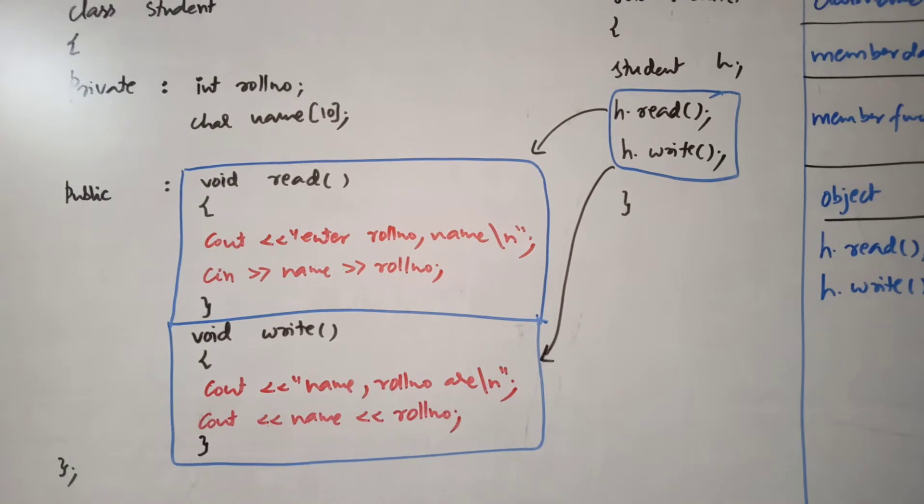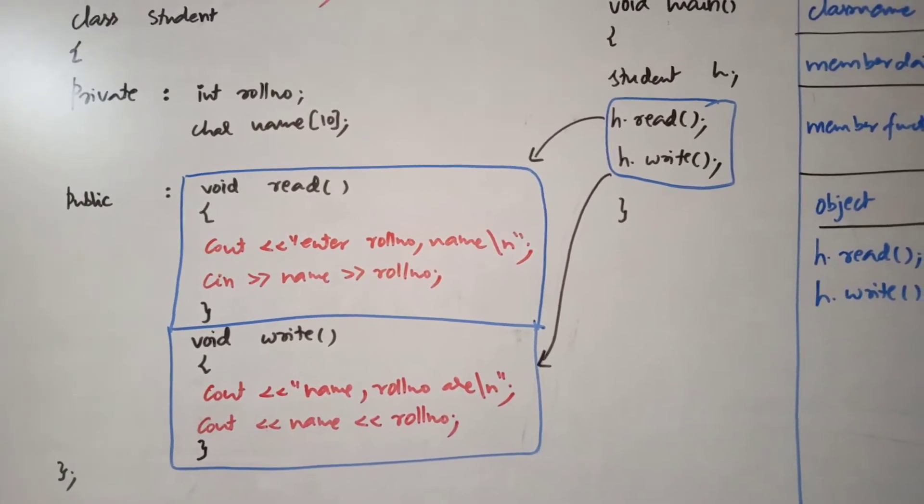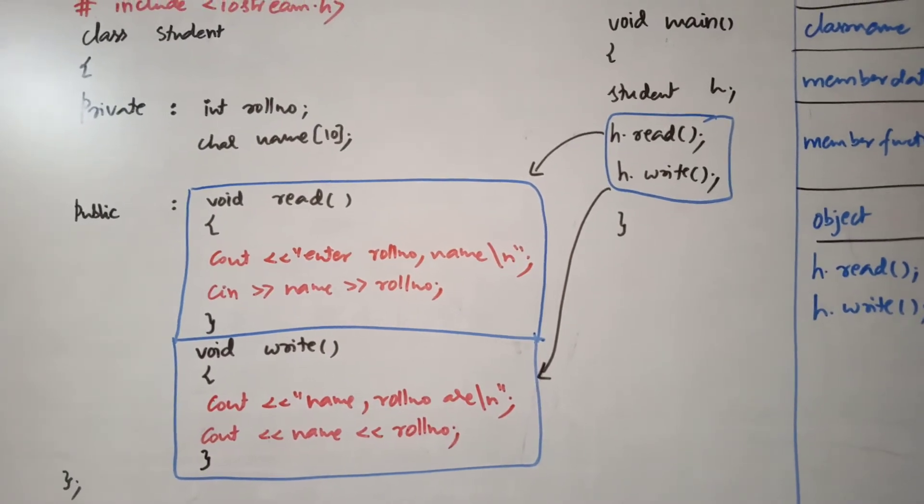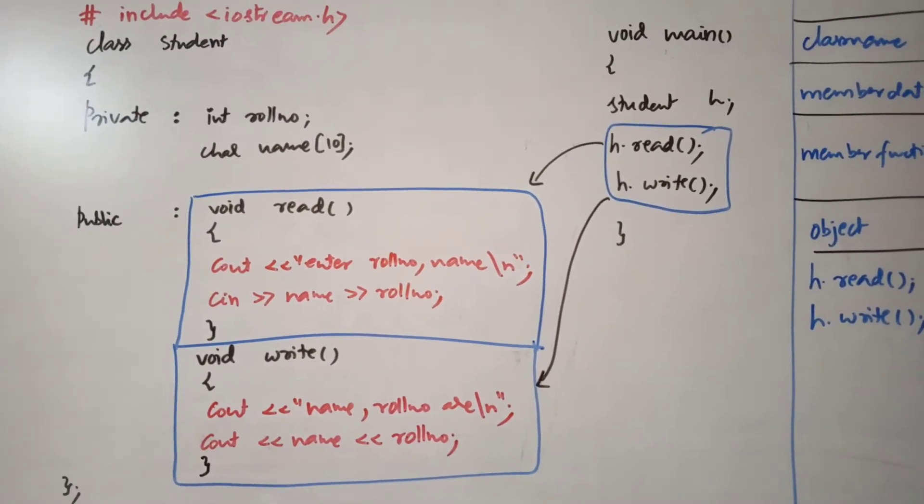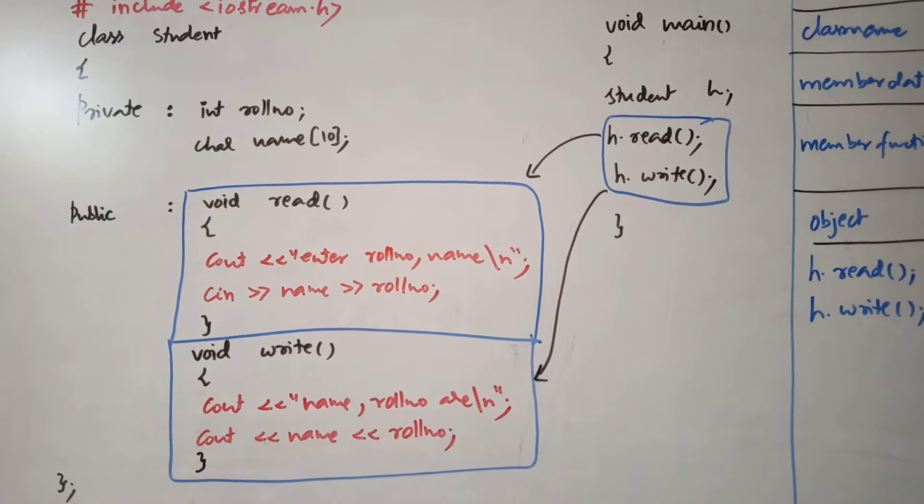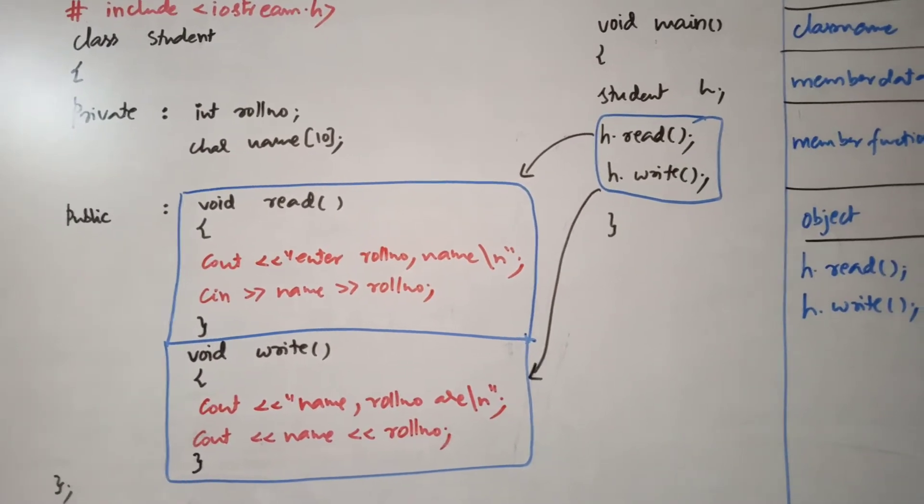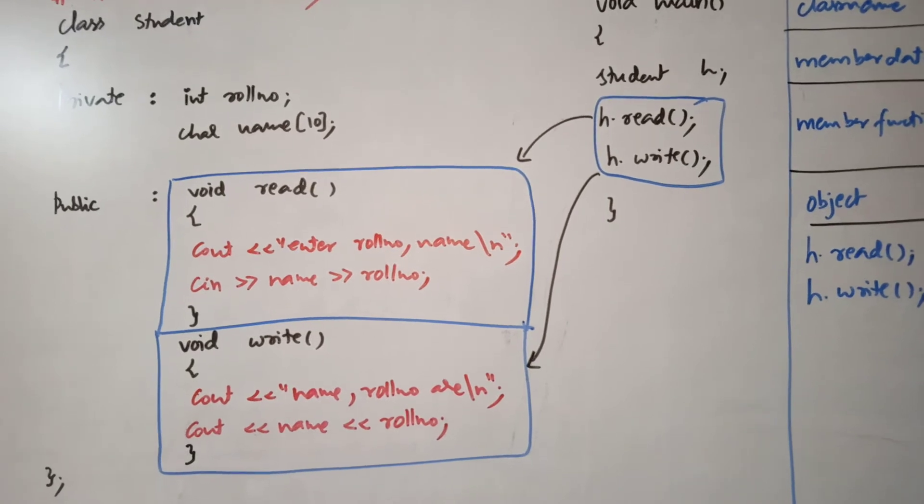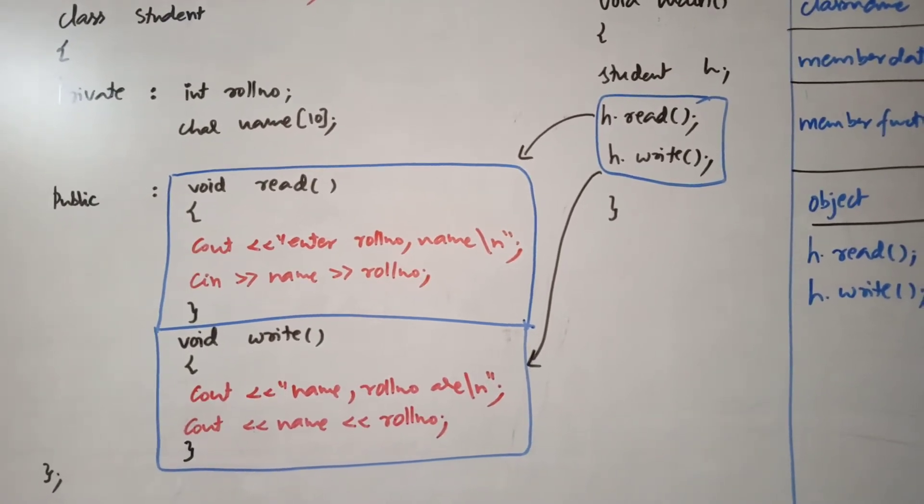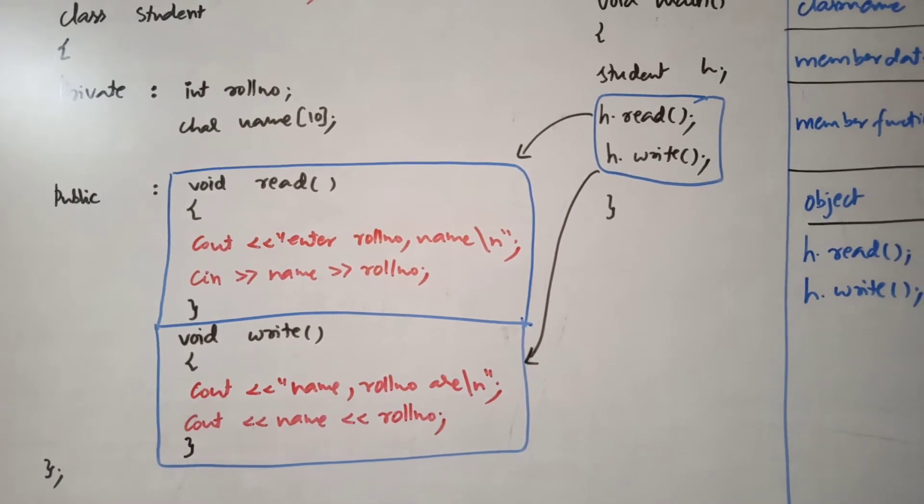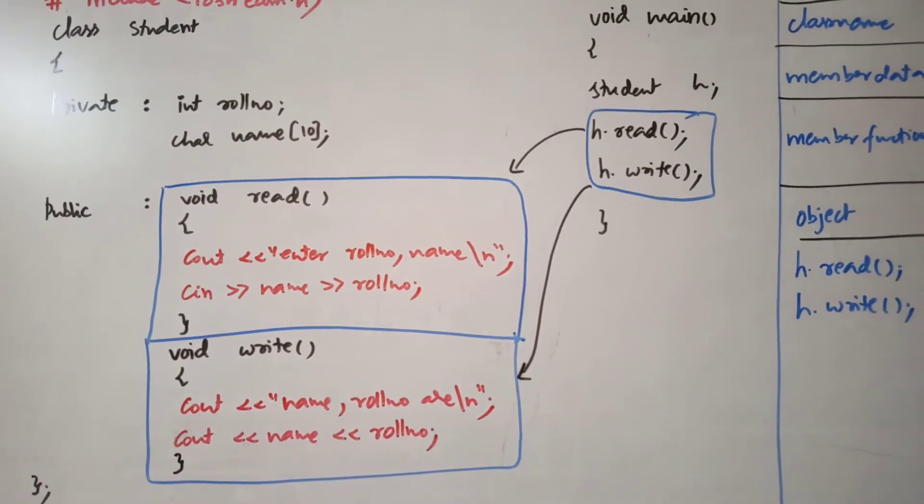So we have two methods read and write. You need to refer functions concept in C language for these type of programs. Function definition, function call plays very important roles in these type of programs. So void read and void write they are function definitions. Functions without arguments prototype one.